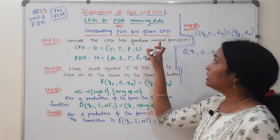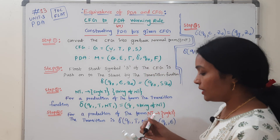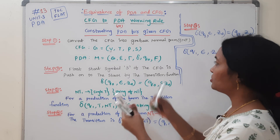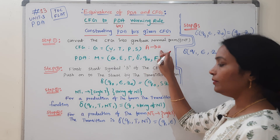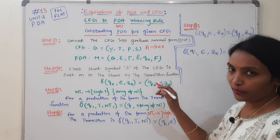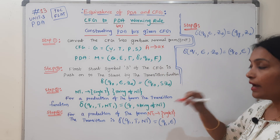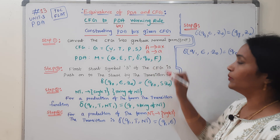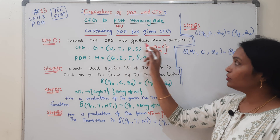Why do we convert the CFG to Greibach Normal Form? In GNF, there are two rules. The first is: A tends to small 'a' followed by a non-terminal — either X, Y, or any non-terminal. The second is: A tends to a single terminal. These two rules are used in the CFG to Greibach Normal Form conversion.